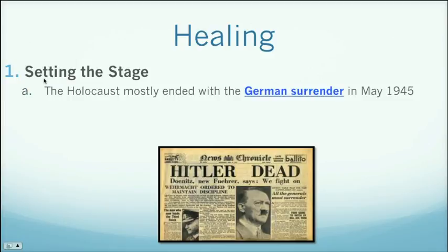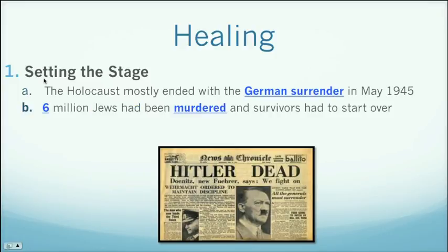The Holocaust mostly ended with the German surrender in May of 1945. Shortly before this — called VE Day, Victory in Europe Day, May 8, 1945 — Hitler committed suicide. Hitler is never going to be brought to justice for what he did in causing World War II and the Holocaust; he was dead before this actually finished up. Six million Jews had been murdered and now the survivors had to start over. There were thousands of people still in concentration camps, alive when this all ended.